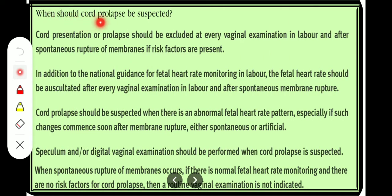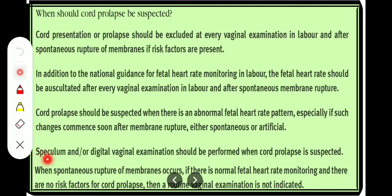When should cord prolapse be suspected? Cord presentation and prolapse should be excluded at every vaginal examination in labour and after spontaneous rupture of membranes if risk factors are present. The fetal heart rate should be auscultated after every vaginal examination in labour and after spontaneous rupture of membranes. Cord prolapse should be suspected when there is an abnormal fetal heart rate pattern, especially if such changes occur soon after membrane rupture, either spontaneous or artificial. When cord prolapse is not suspected and there is normal fetal heart rate monitoring with no risk factors, routine vaginal examination is not indicated.